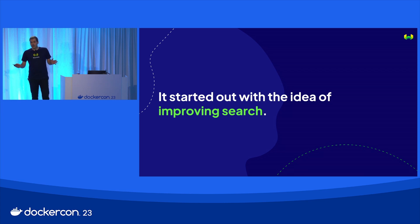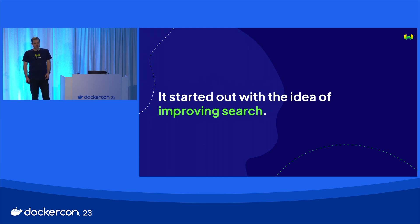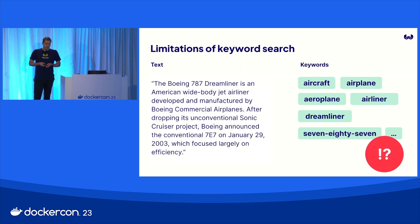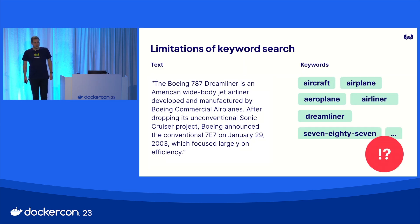Right now everyone has AI FOMO, so everyone wants to do something related to AI. But Weaviate, both the company and the product, is actually quite a bit older. We started four and a half years ago and it started with the idea of improving search. The first version of this slide was created when I was on a plane — a 787 Dreamliner.